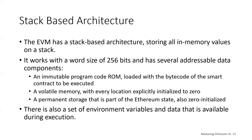The Ethereum virtual machine has a stack-based architecture, storing all in-memory values on a stack — a last-in, first-out data structure. It works with a word size of 256 bits to facilitate native hashing and elliptic curve operations, and has several addressable data components: an immutable program read-only memory loaded with the bytecode of the smart contract to be executed, a volatile memory with every location initially initialized to zero, a permanent storage that's part of the Ethereum state also initialized to zero, and a set of environmental variables and data available during execution.